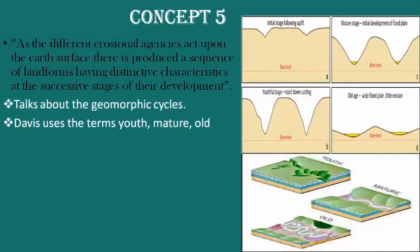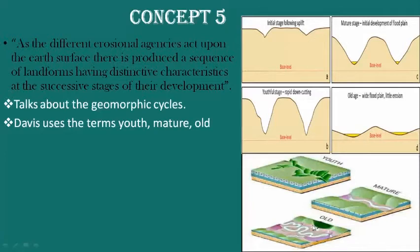Concept five states that as different erosional agencies act upon the Earth's surface, there is produced a sequence of landforms having distinctive characteristics at successive stages of development. This refers to the geomorphic cycle — a cycle of development with youthful, mature, and old levels. It was Davis who first spoke about this cycle, with landform controlled by structure, process, and stage.